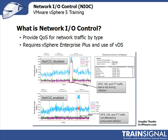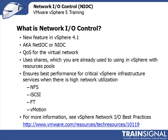Network I.O. Control requires vSphere Enterprise Plus, and it also requires that you're using the vSphere distributed switch, or VDS. It was a new feature in vSphere 4.1, also called NIOC or NetIOC in VMware documentation. It's quality of service for the virtual network, and it uses shares — which you're already used to using in vSphere with resource pools, for CPU and memory — now applied to network quality of service as well.